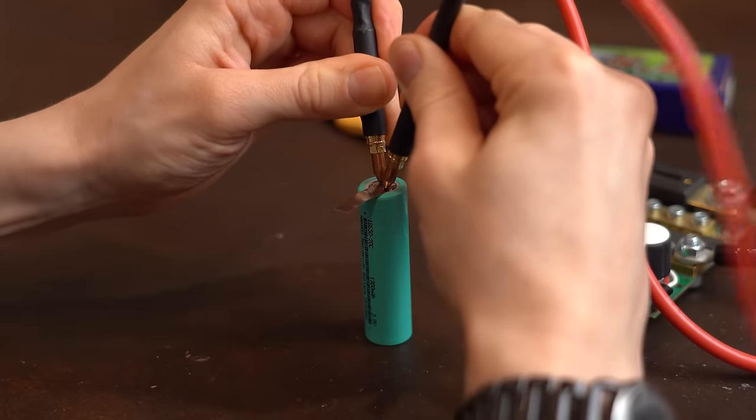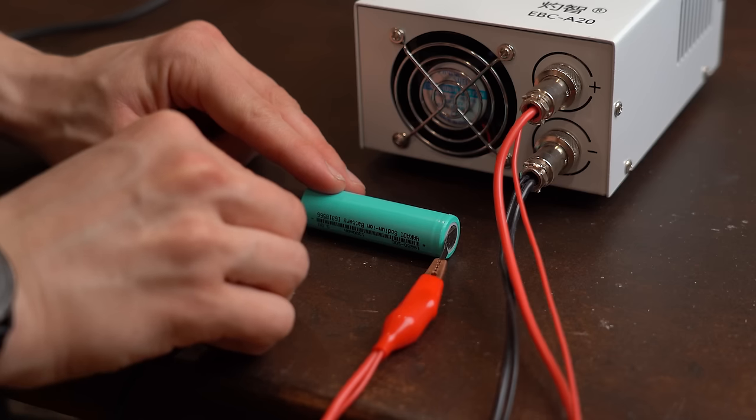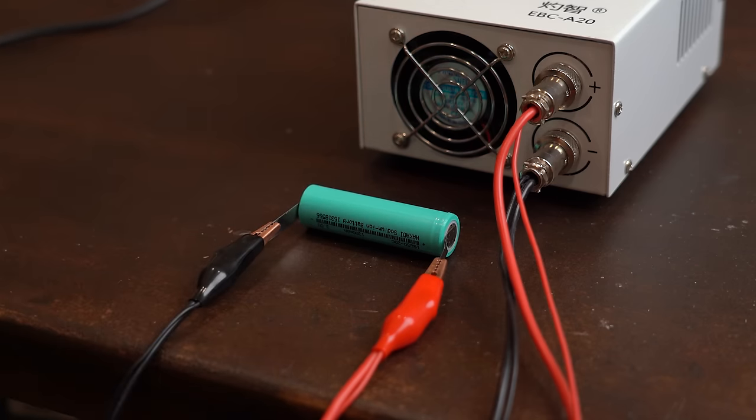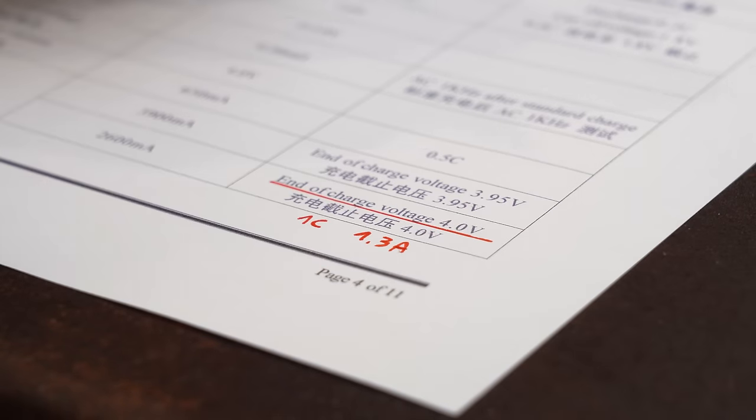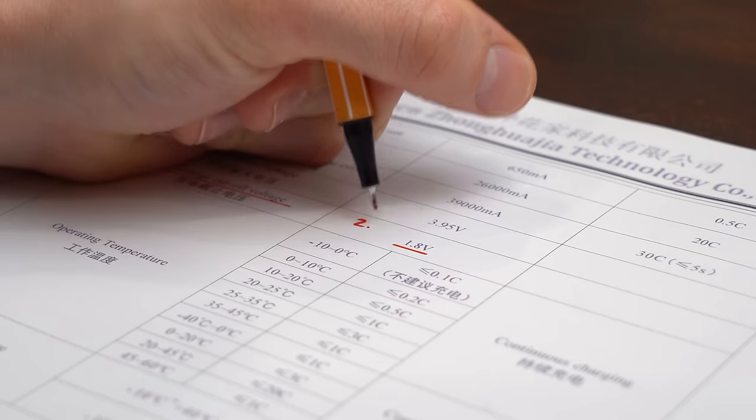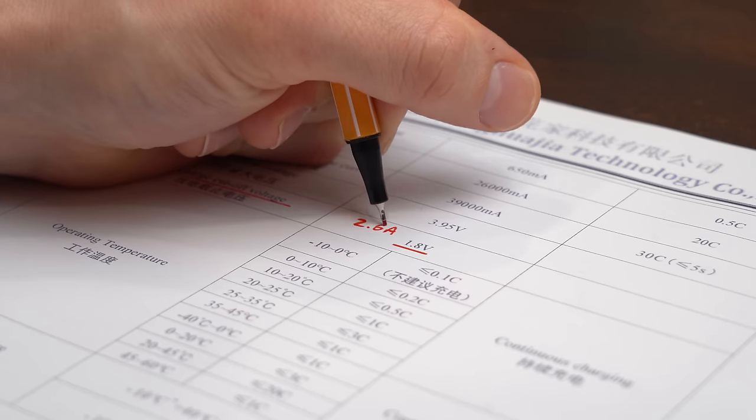So next let's compare it to the supposedly sodium ion batteries for which I also hooked one up to the battery tester and set a charging voltage and current to 4V and 1.3A just like the datasheet recommends it and its discharge current to 2.6A down to this time 1.8V.